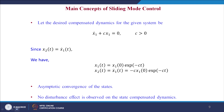Now we are getting into the main concepts of sliding mode control. Let the desired compensated dynamics for the given system — the one-dimensional motion of this two-degree-of-freedom system — be the first order equation: ẋ₁ + cx₁ = 0, where c > 0.